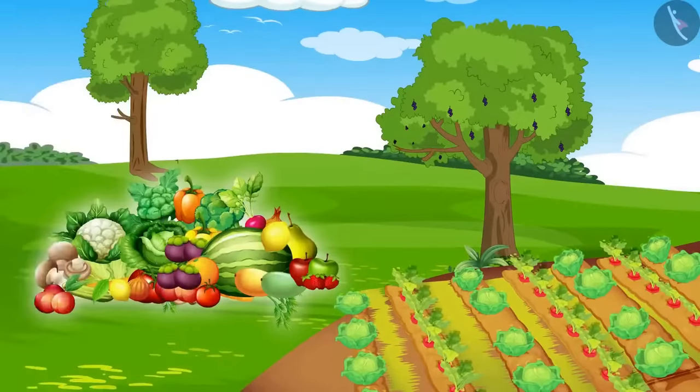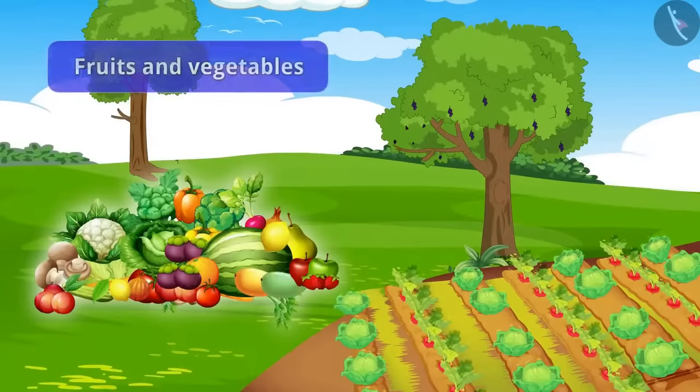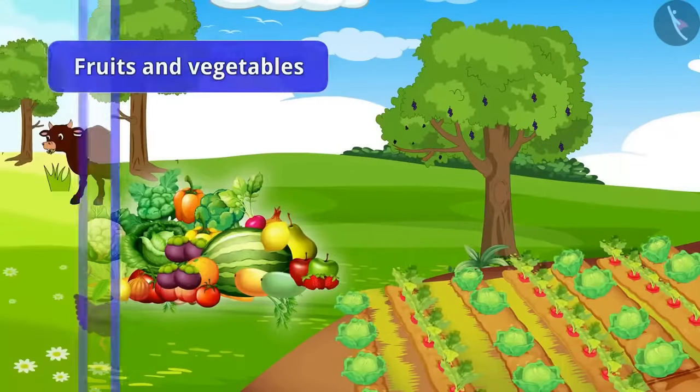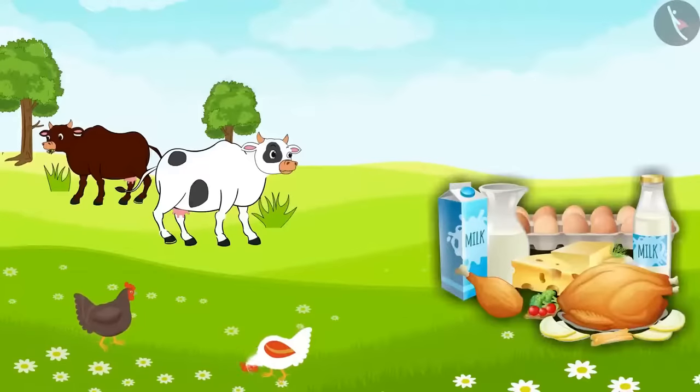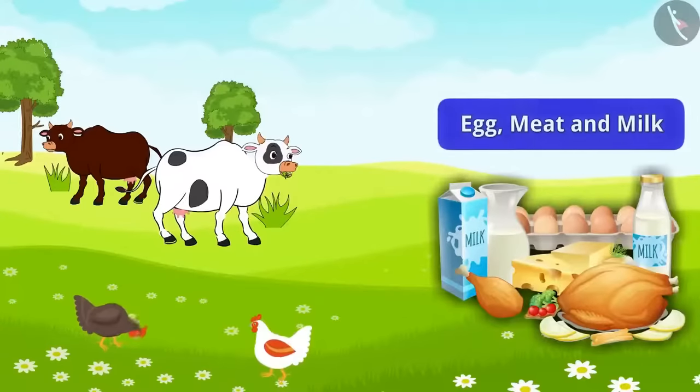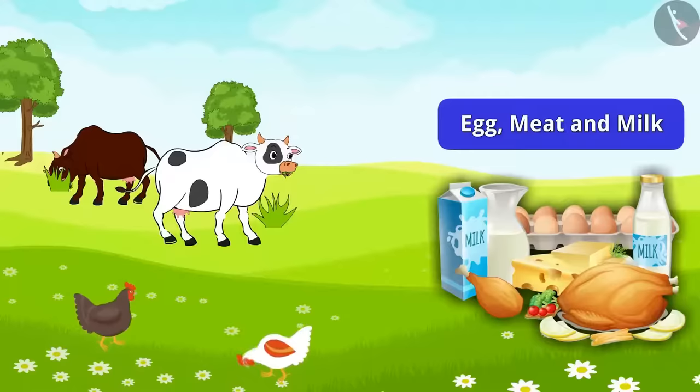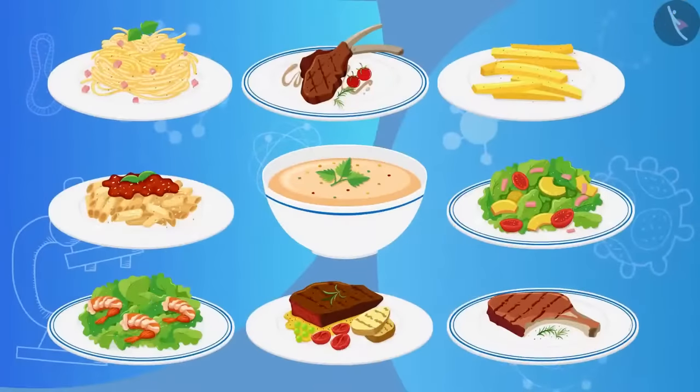So, what do we get from trees? We get fruits and vegetables. And what do we get from animals? Animals provide egg, meat and milk. And by combining all these, we prepare different varieties of food.